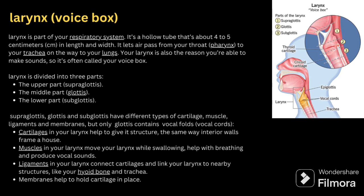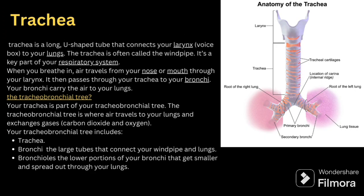Next, the trachea is a U-shaped tube that connects the larynx, that is the voice box, to your lungs. The trachea is often called the windpipe. It is a key part of the respiratory system. When we are breathing in, air travels from the nose or mouth through the larynx, then passes through the trachea to the bronchi, where the bronchi carry the air to the lungs. The trachea is part of the tracheobronchial tree, where air travels to the lungs and exchanges gases — carbon dioxide and oxygen. The tracheobronchial tree includes the trachea, bronchi, and bronchioles. Bronchi are the large tubes connecting the windpipe and the lung; bronchioles are smaller.